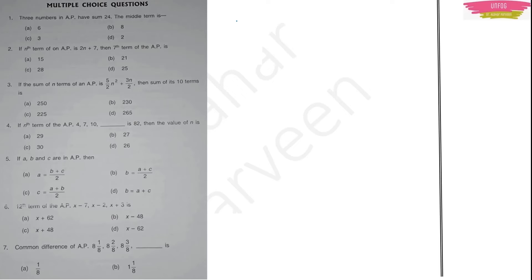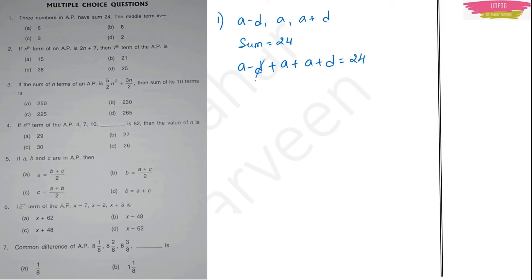Question 1: Three numbers in AP have sum 24. Find the middle term. Write the three numbers as a−d, a, a+d. Their sum: (a−d) + a + (a+d) = 24. The d terms cancel, giving 3a = 24, so a = 8. The middle term is 8. Option B is the right answer.